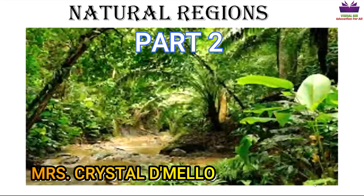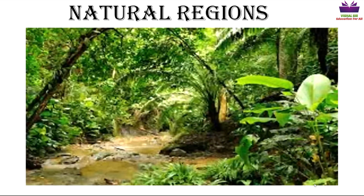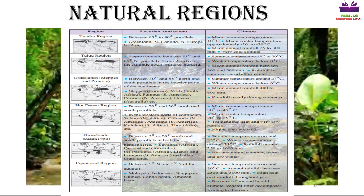Children, we continue with our chapter. Last week we began a new topic: natural regions. We studied four different types of regions - tundra, taiga, grasslands, and hot desert. This week we'll learn about the Sudan-type grasslands and the equatorial region.